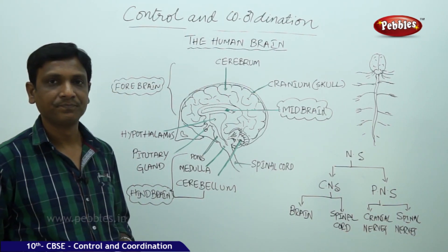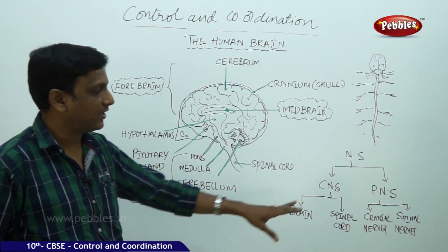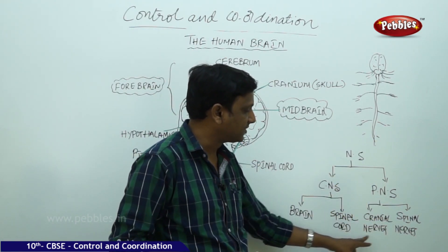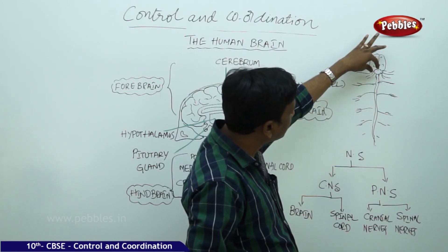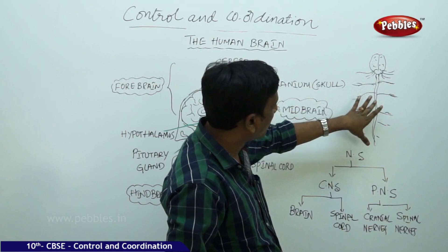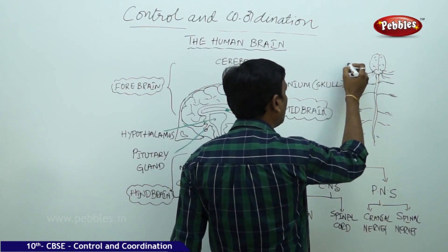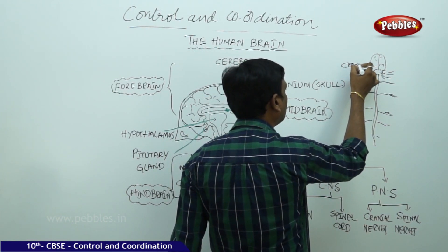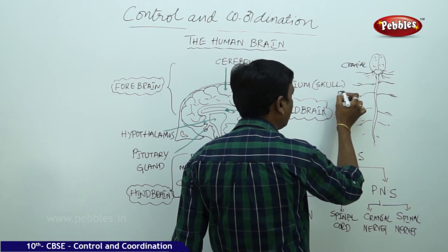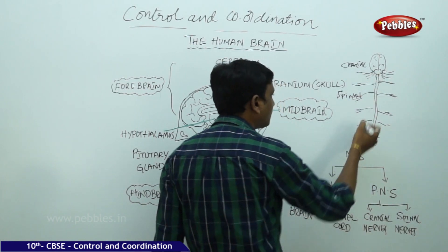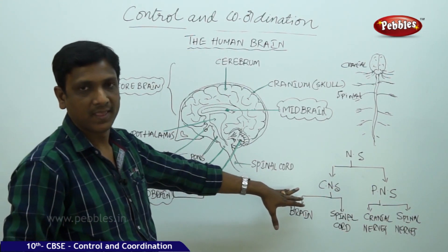The brain and spinal cord are connected to different body parts through the Peripheral Nervous System. The Peripheral Nervous System is divided into two: the Cranial Nervous System and the Spinal Nervous System. We can see in the picture that the brain and spinal cord together form the CNS. Nerves arising from the brain are called Cranial Nerves, and nerves arising from the spinal cord are called Spinal Nerves. Cranial and spinal nerves together constitute the Peripheral Nervous System.